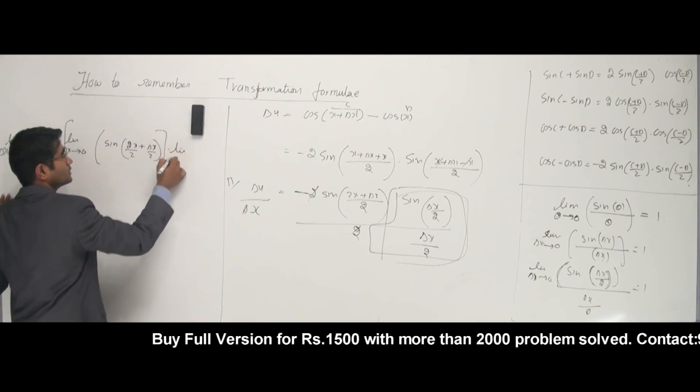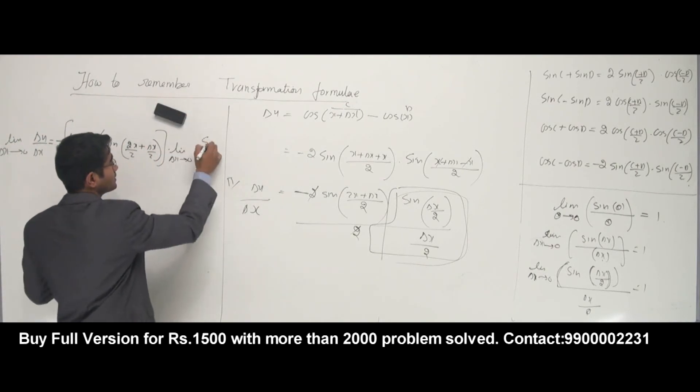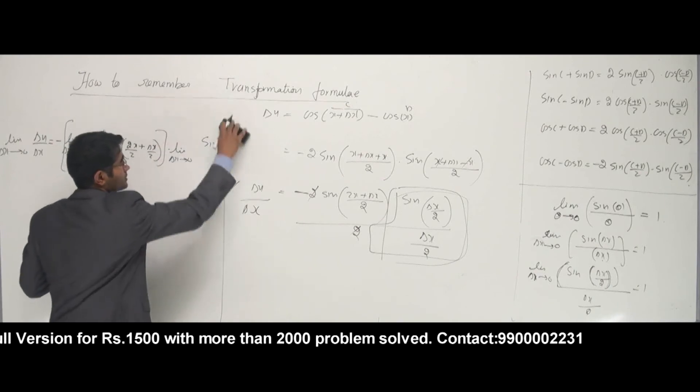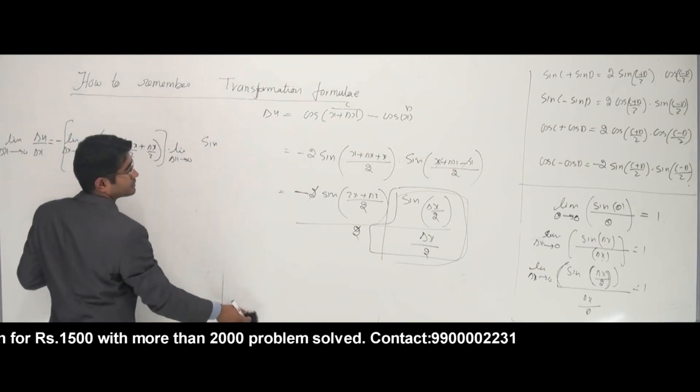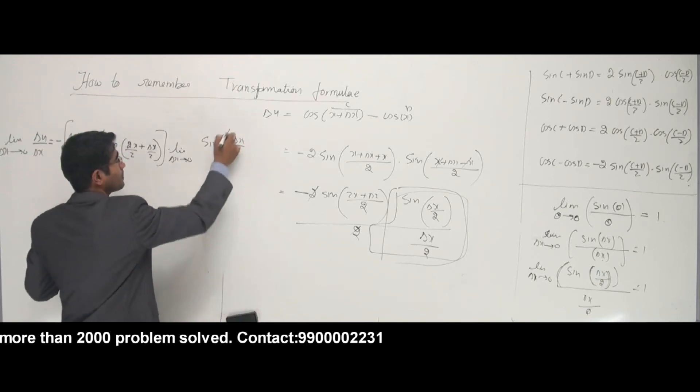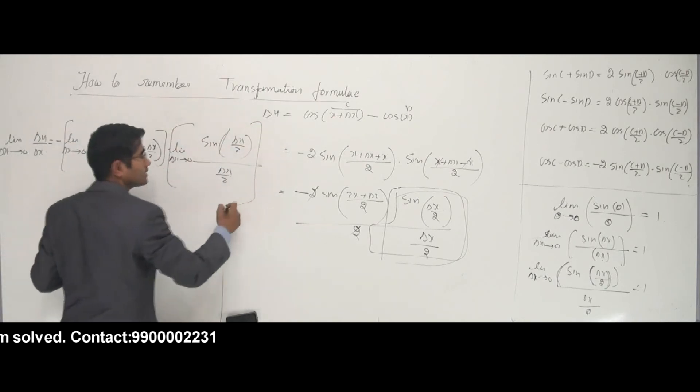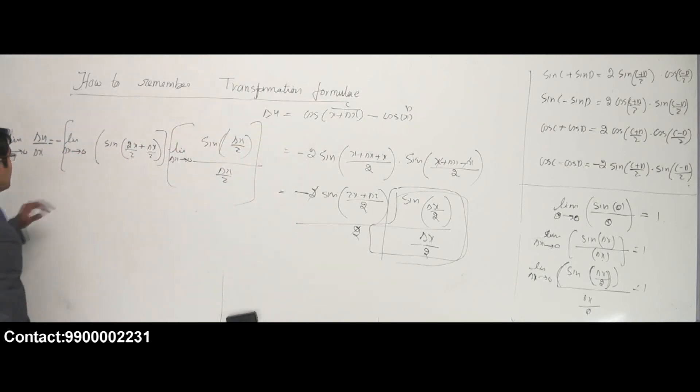I have minus 2 limit of delta x tends to 0, and the other term is sine delta x by 2, divided by delta x by 2. This is looking like that standard formula.